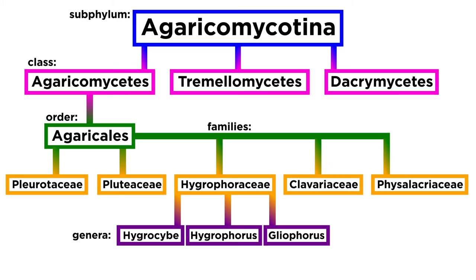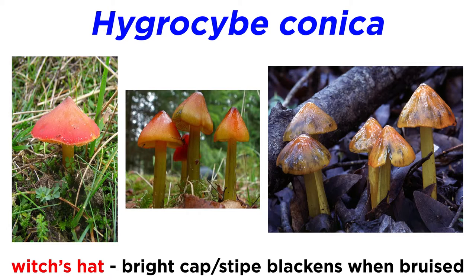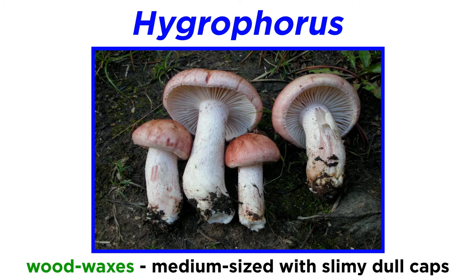Hygrocybe mushrooms are small mushrooms with convex caps that are often brightly colored in shades of red, orange, or yellow. Most Hygrocybe species are mycorrhizal with plant roots. A notable species is Hygrocybe conica, commonly known as the witch's hat. This mushroom has a bright red-orange cap and yellow stipe, but when damaged or bruised it blackens in color.